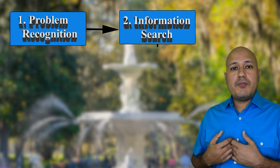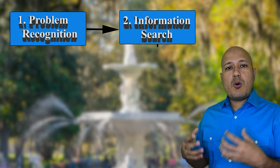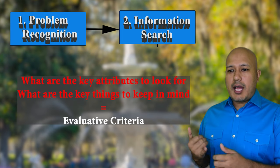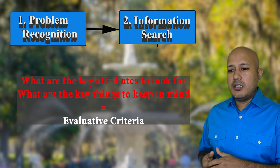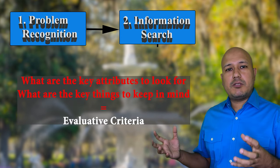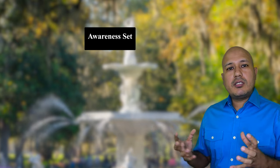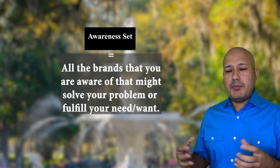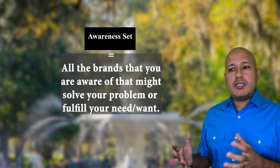The first step is recognizing the problem. The second step is searching for information on how to solve it. Once you've figured out what things you need to keep in mind, what attributes to look for, how you are going to buy it, where to buy it, and how much it costs, you might come up with a very big list of different brands and specifications. But you cannot actually sit through and evaluate all the alternatives because it would be too much information. So what consumers generally do is they break the choice down to small pieces, just like I did.